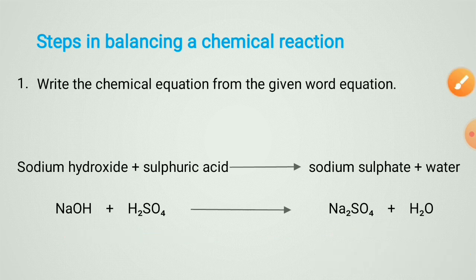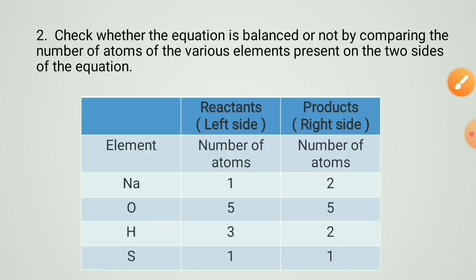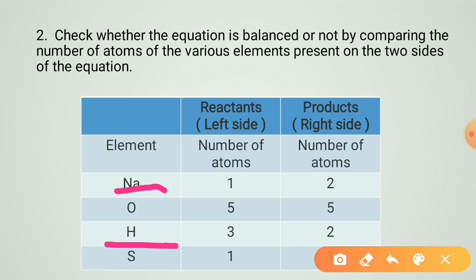Step 2: check whether the equation is balanced or not by comparing the number of atoms of each element on both sides. Sodium in the reactant is one; product is two. Oxygen in the reactant is five; product also five. Hydrogen in the reactant is three; product is two. Sulfur in the reactant is one; product also one. Sodium and hydrogen are uneven, so you have to balance this equation.